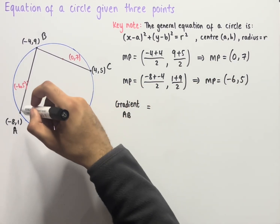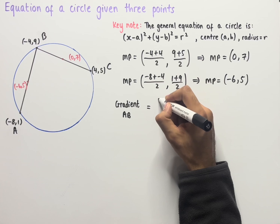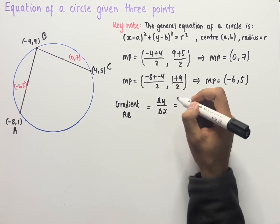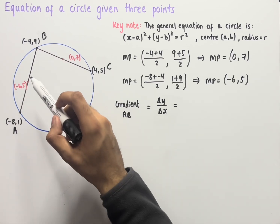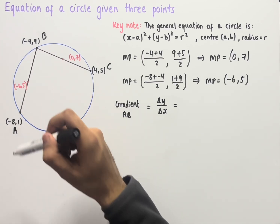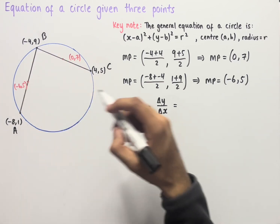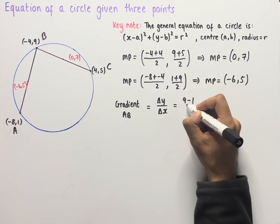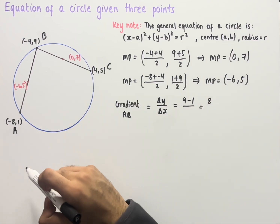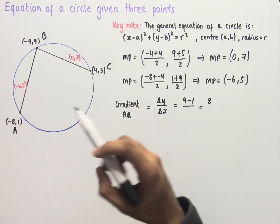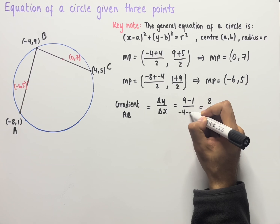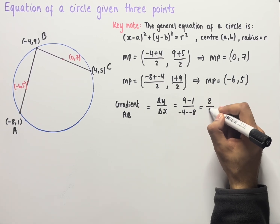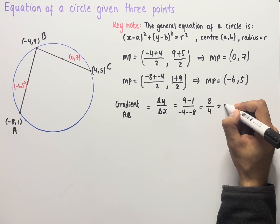To find the gradient of chord AB we work out the change in y over the change in x. We take the y-coordinates and subtract them, then divide by the x-coordinates subtracted. So 9 - 1 equals 8, over -4 - (-8), which simplifies to -4 + 8 = 4. Eight divided by four gives a gradient of 2.